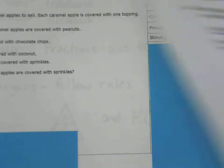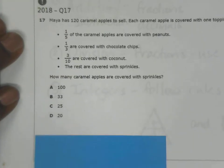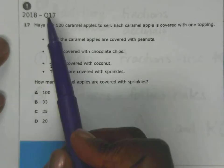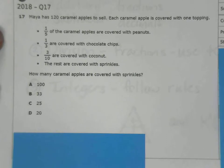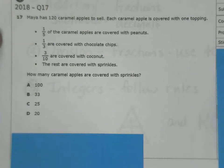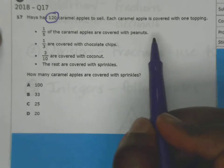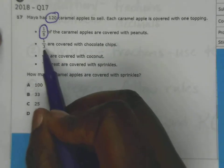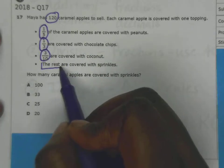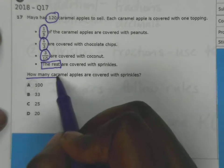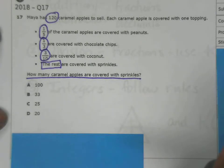Let's look at another. This was also on last year's test, question 17, and it's a 7.3B problem. It says Maya has 120 caramel apples to sell. Each caramel apple is covered with one topping. One-fifth of the caramel apples are covered with peanuts, one-third are covered with chocolate chips, three-tenths are covered with coconut, and the rest are covered with sprinkles. The question is, how many caramel apples are covered with sprinkles?